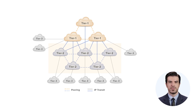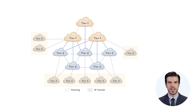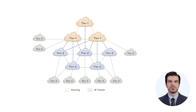Tier 2 providers also need to buy service from Tier 1 providers. Tier 3 ISPs are local providers with national reach; they usually buy IP transit from Tier 2 providers to avoid expensive Tier 1 IP transit. Such providers are typically without any transit customers and have no peering connections.